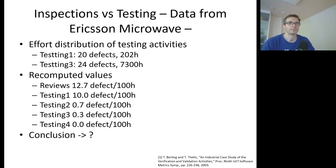Now we get some recomputed efficiency values per 100 hours of work. We can find that software reviews finds 12.7 defects. In testing 1 we find 10.0 defects. In testing 2 the number is 0.7, in testing 3 it is 0.3, and in testing 4 it is 0.0.